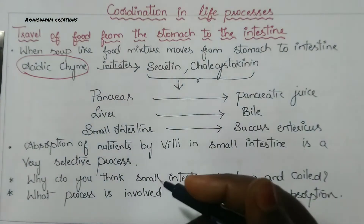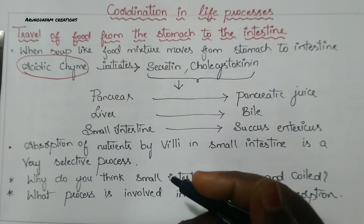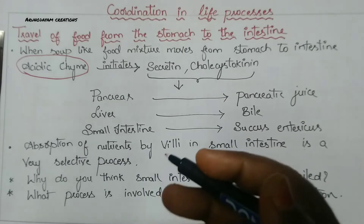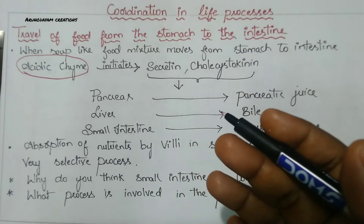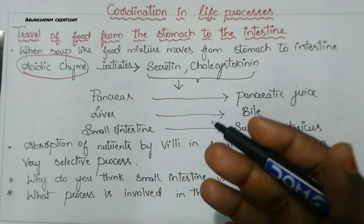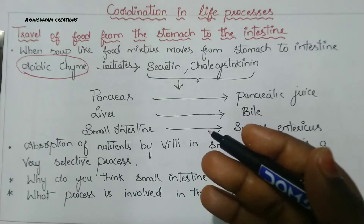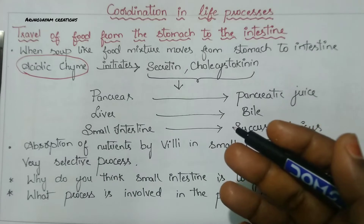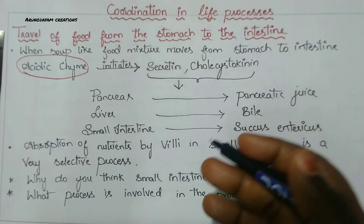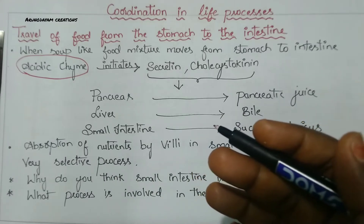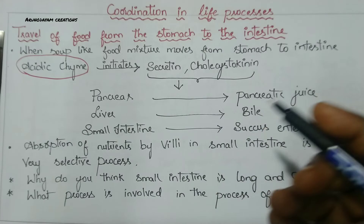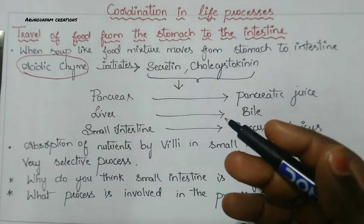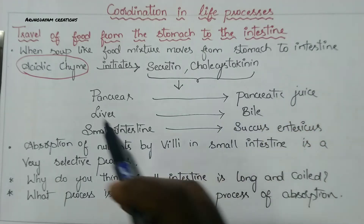Why is chyme acidic in nature? We all know that the stomach has hydrochloric acid. HCl is present and produced in the stomach for enzymatic activation - to activate enzymes - and also for killing germs. Because the chyme comes from the stomach, the chyme is acidic in nature.